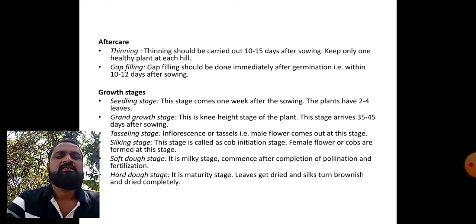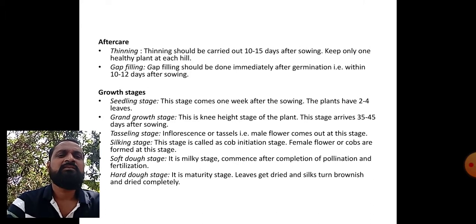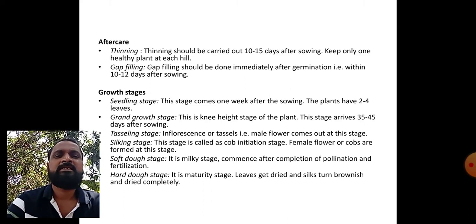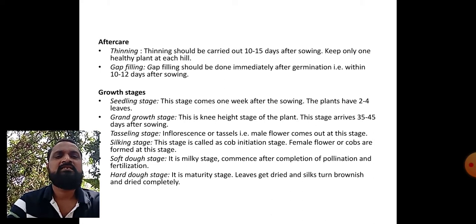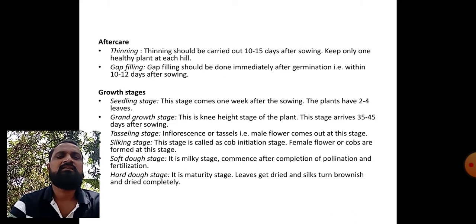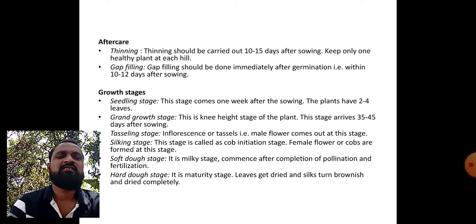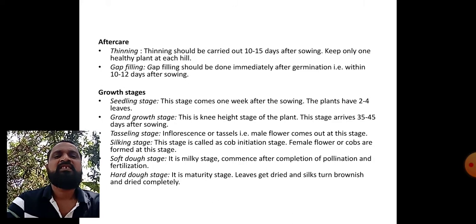Growth stages: seedling stage comes one week after sowing when plants have two to four leaves. Grand growth stage is the knee-height stage of the plant, arriving 35 to 45 days after sowing. Tasseling stage: the inflorescence, also known as tassels (male flowers), comes out at this stage. Silking stage is called the cob initiation stage, where female flowers or cobs are formed.